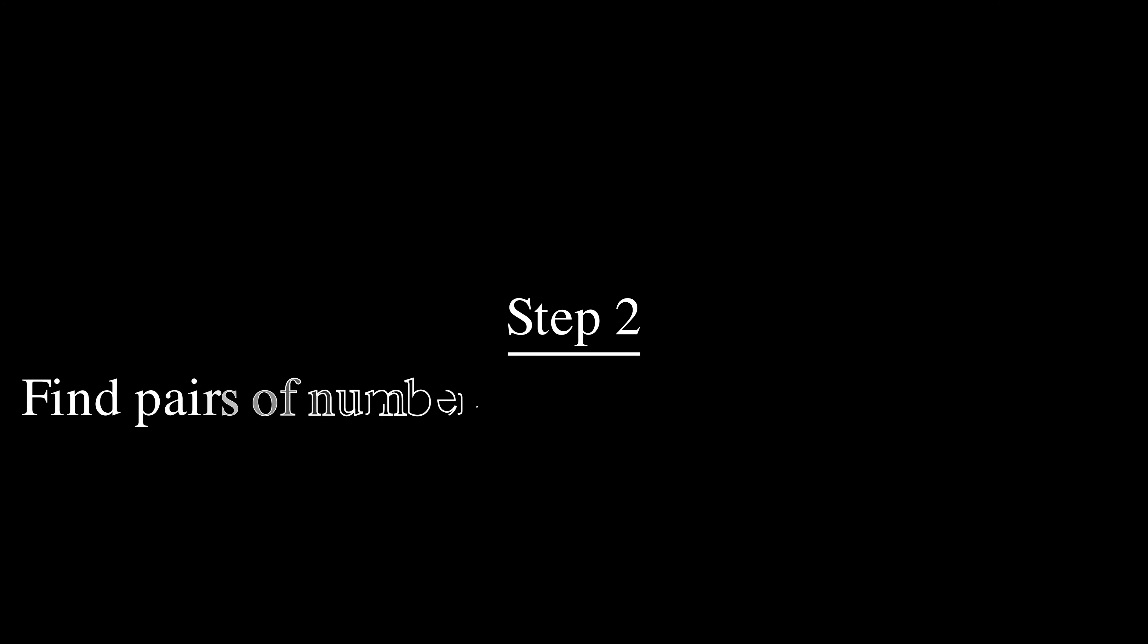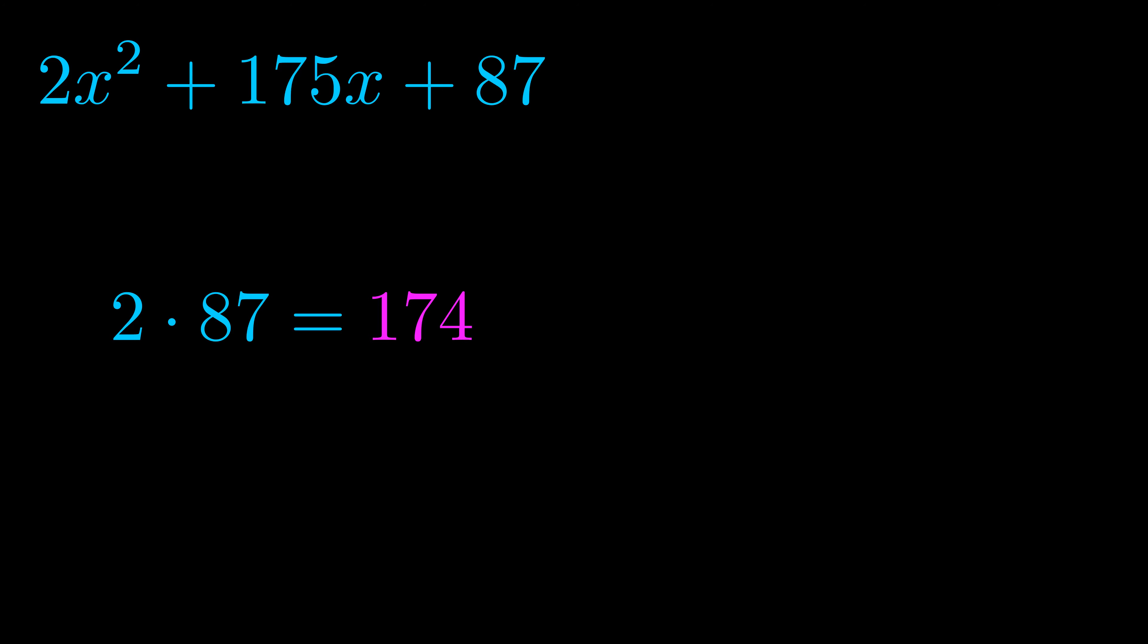Step two is to try to find all of the pairs which multiply to this number. Now turns out you don't really need to find all of them but go ahead and write down as many numbers as you can that multiply to the magenta value for now. Pause the video and resume when you're ready to continue.